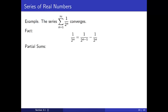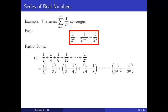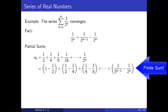We're now ready to consider the partial sums of this series. S_n equals the sum from j equals 1 to n of 1 over 2^j, which by our fact equals 1 - 1 over 2^n using the telescoping property.